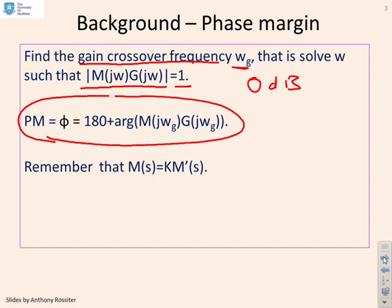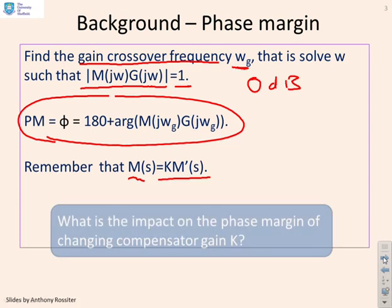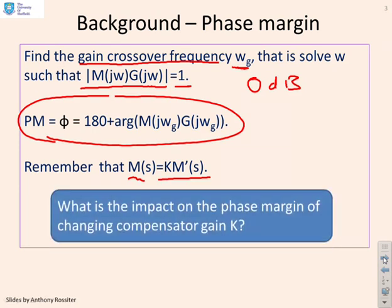Remember, we're writing M(s) = k·M'(s). The key question we want to ask is: how does this phase margin change when I change my compensator gain k?